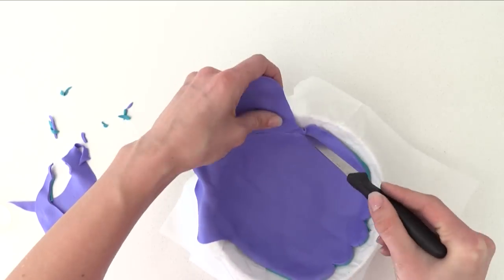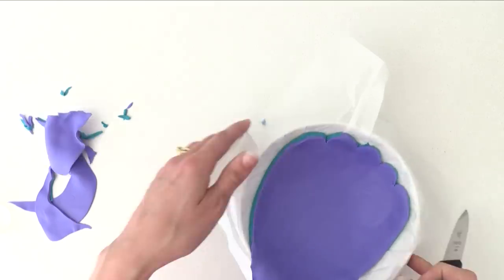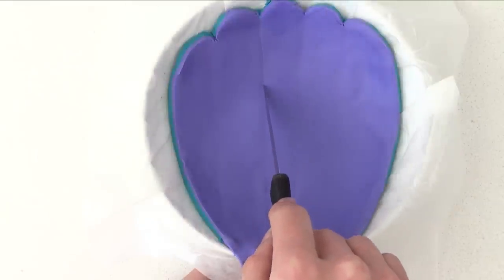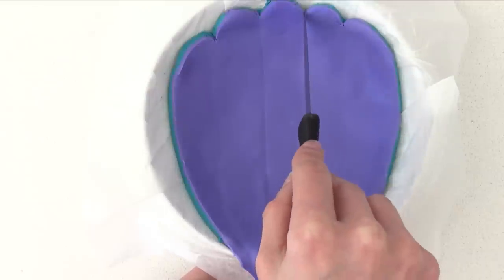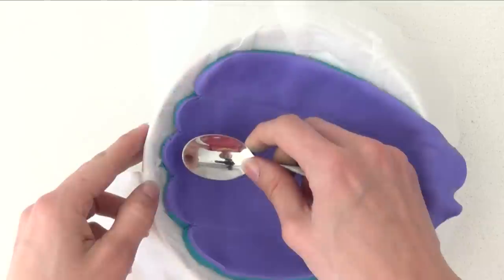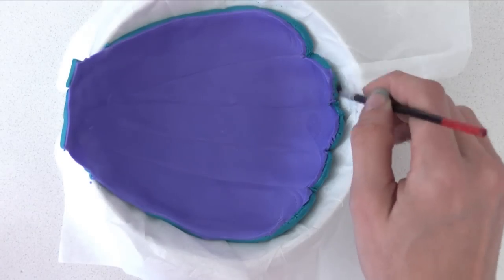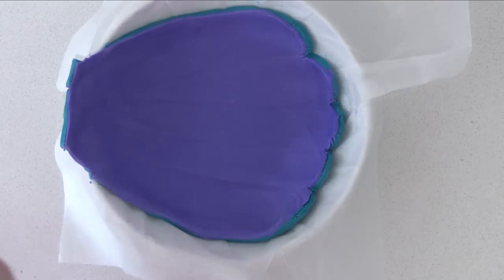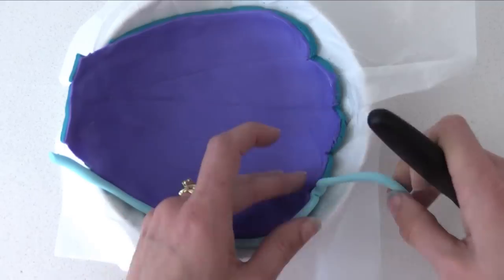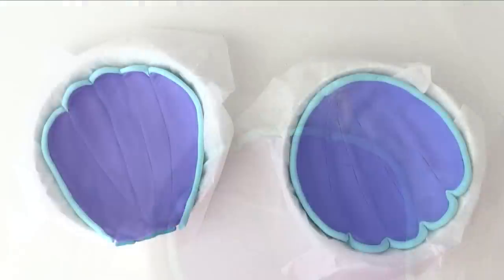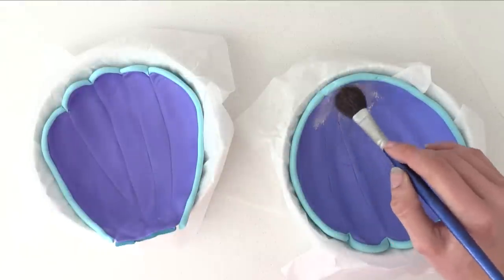Use the back of your knife to draw lines down the inside. Use the back of a teaspoon to give it an indent between the lines for texture. Brush a little water around the very edge, then add a thin snake of pale blue all the way around, pushing it into those curves. Brush it lightly with white luster dust to give it a pearly look.